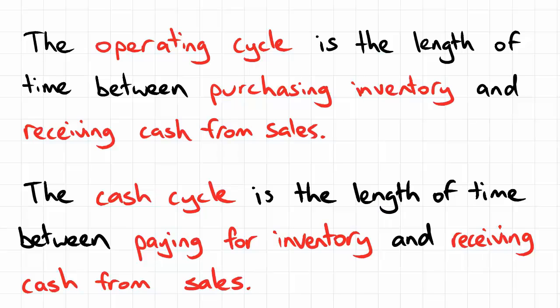The distinction lies in trade credit. On the one hand, from when you acquire inventory on trade credit, how long will it be before you receive cash from having sold it? Whereas with the cash cycle, you're saying from the moment that you have paid out cash for your inventory, how long will it be before the cash is coming back in?